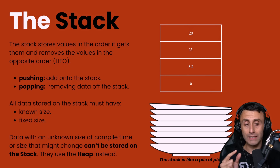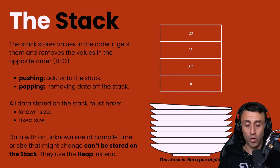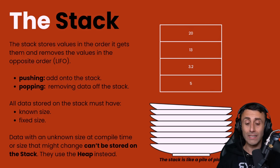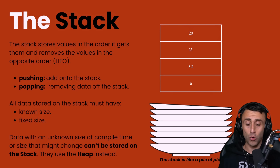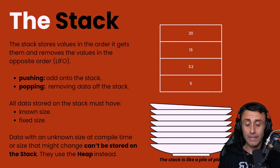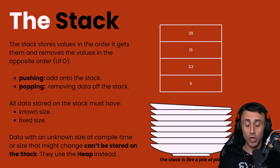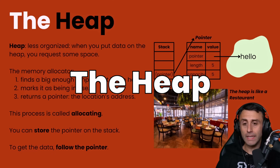All data stored on the stack must have a known and fixed size that cannot change during the execution of the program. At some point you might have to deal with data that has an unknown size or whose size may change during execution. In those cases it can't be stored on the stack, so we need to use a different data structure called the heap.